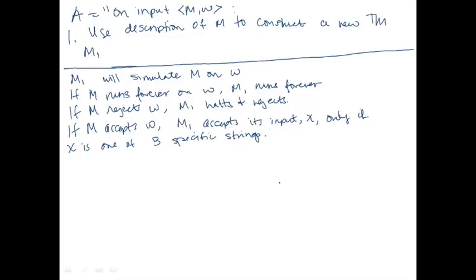How do we make the size of the language of M1 be exactly 3? We accept its input only if it's one of three specific strings. This way the only strings M1 can possibly accept are those three strings, and it always accepts when its input is one of them. This means the size of its language is exactly 3. How do we choose these three strings? It doesn't really matter — one way is to assume an ordering on the strings in sigma star.